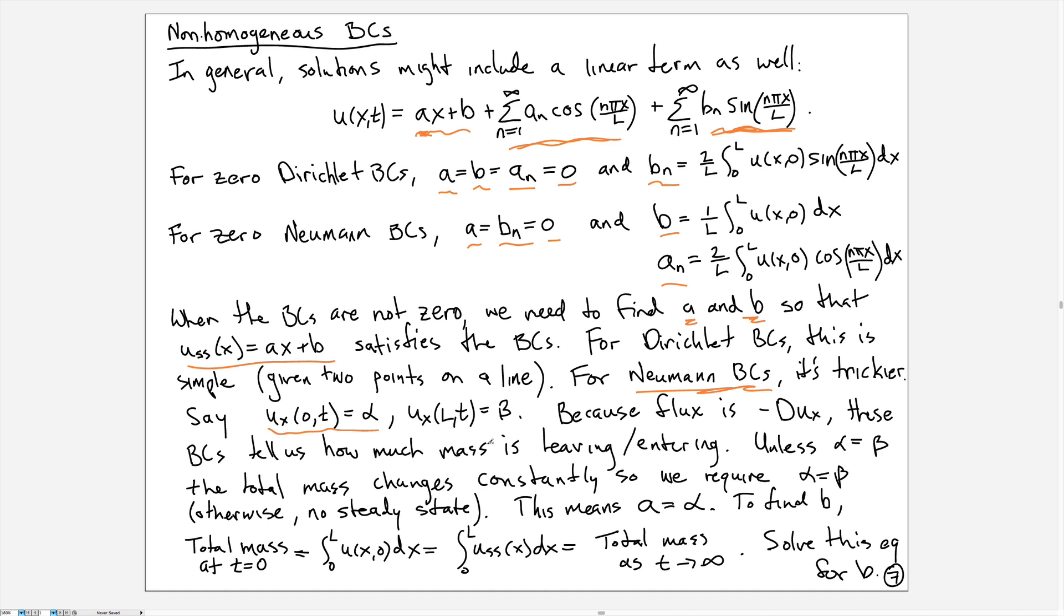We will always consider cases where alpha is equal to beta, because otherwise you have an imbalance of mass flux and the mass will either be removed completely after a long period of time or it'll blow up to infinity after a long period of time.